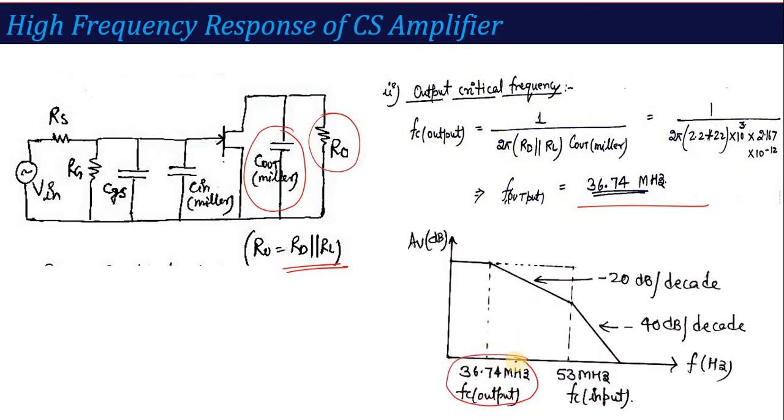Firstly, 36.74 megahertz is the higher cutoff, the output cutoff. Then after that, minus 20 dB slope. After 53, you will get minus 40 dB slope. I think if you have done frequency response, low frequency response or high frequency response, you understand what we have to do in response.